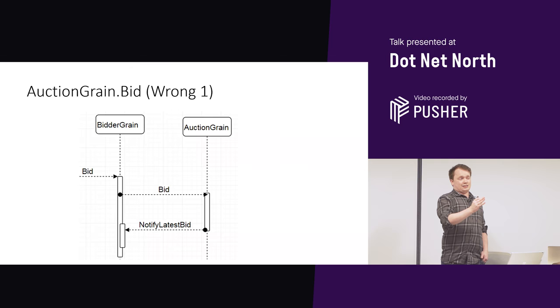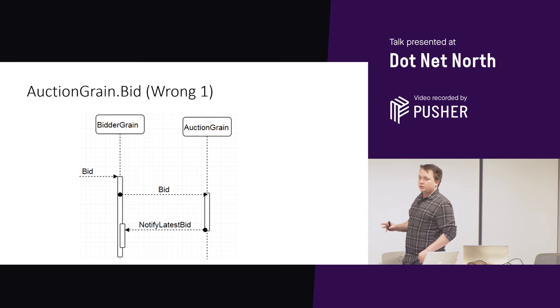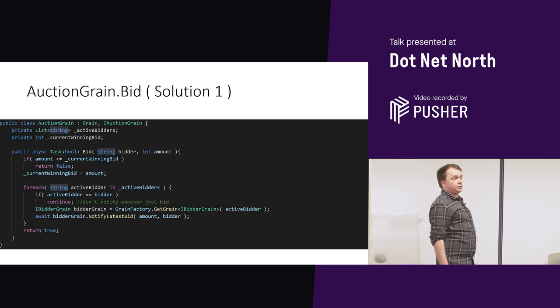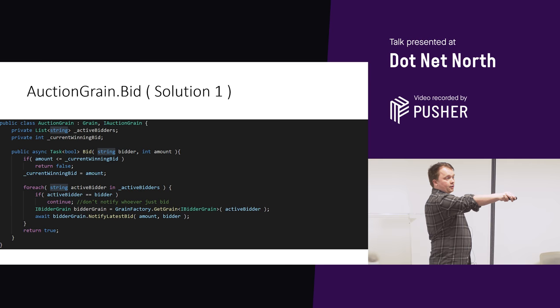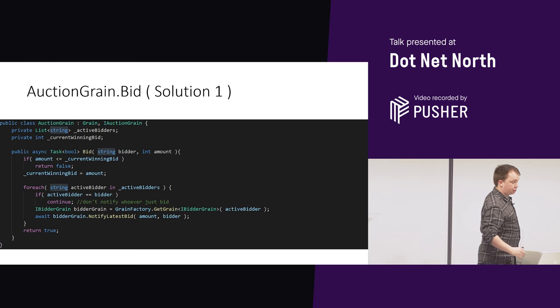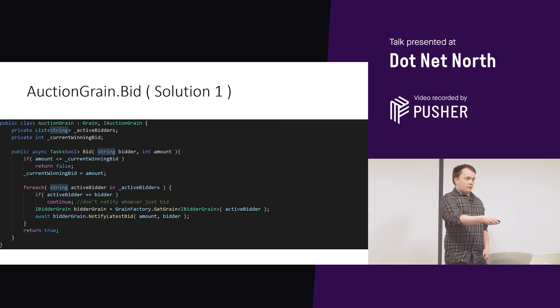This tends to be the most common mistake I ever see. When people say Dan, my actors don't work — I say draw them out, I want to see what is busy and when. Solution one: we're going to go through our list of active bidders, and we're going to double check to see if the current bidder that's bidding is in that list. We never notify the bidder that has just become the new winning bidder — does it need to know? Depends on your use case. For this instance, no, because we have the return to say success.